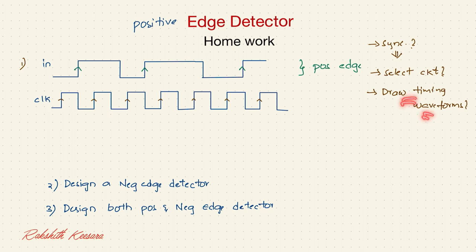So, these three things I want you to do. What do you mean by timing waveforms? The output Q1 and the real output, where it detects an edge like this. And whenever there is an edge, I need it high for one clock cycle. You are getting, right?